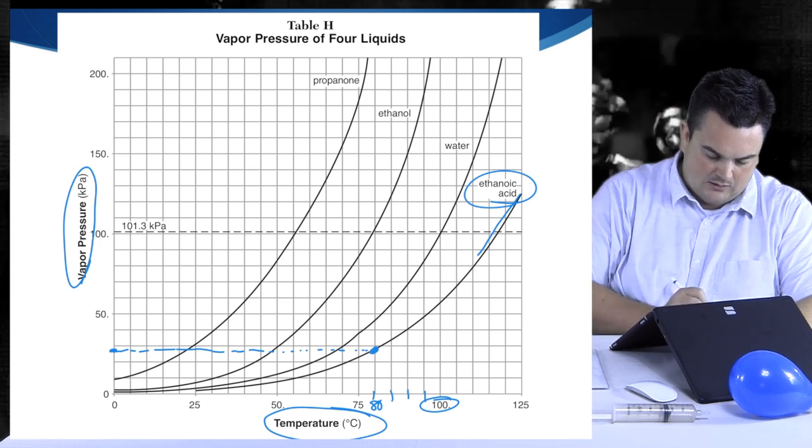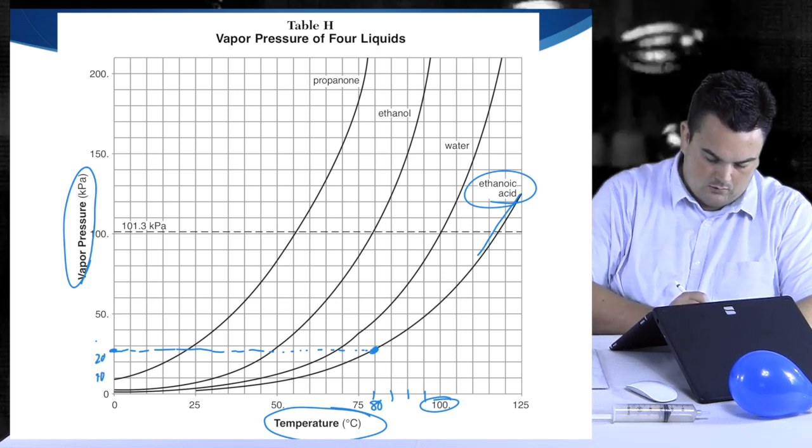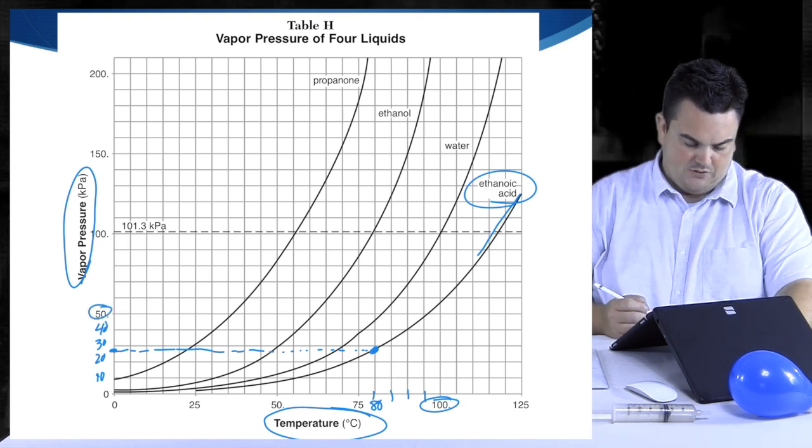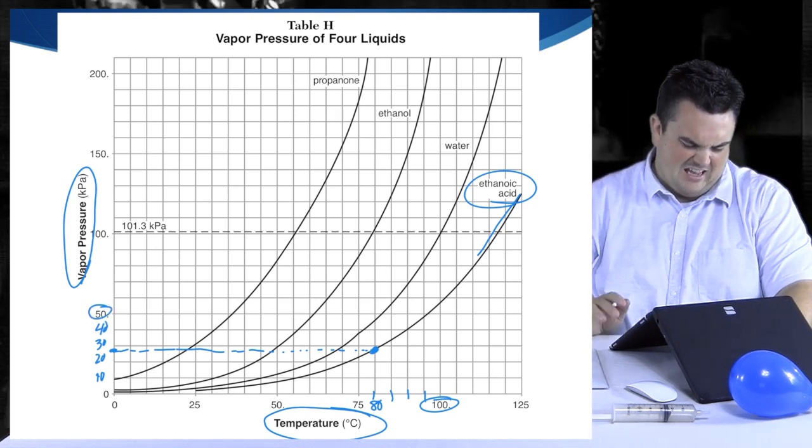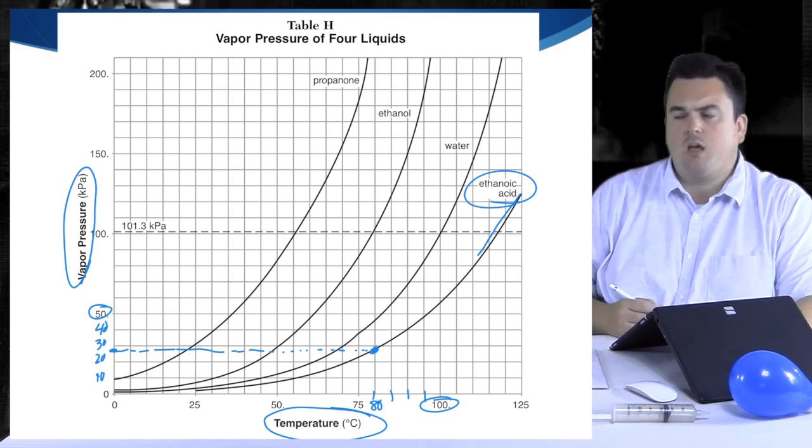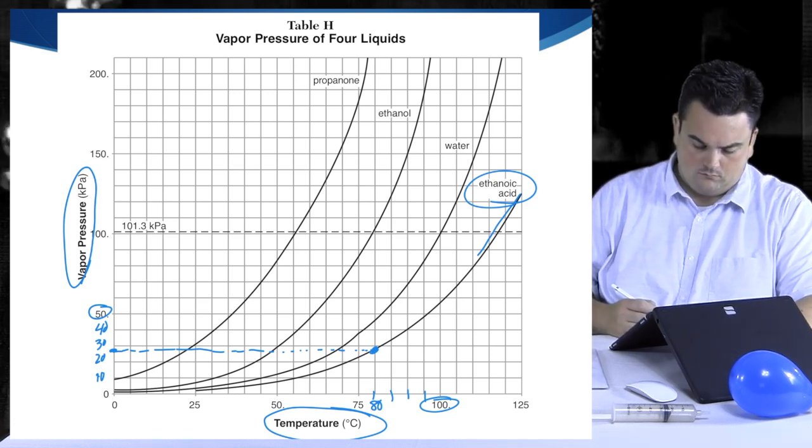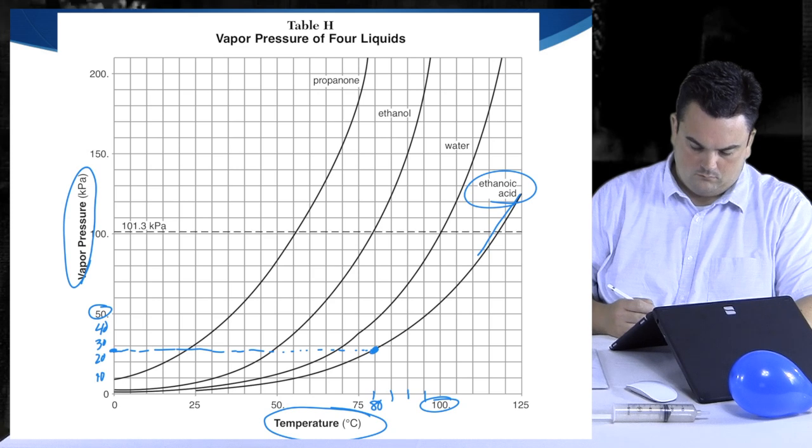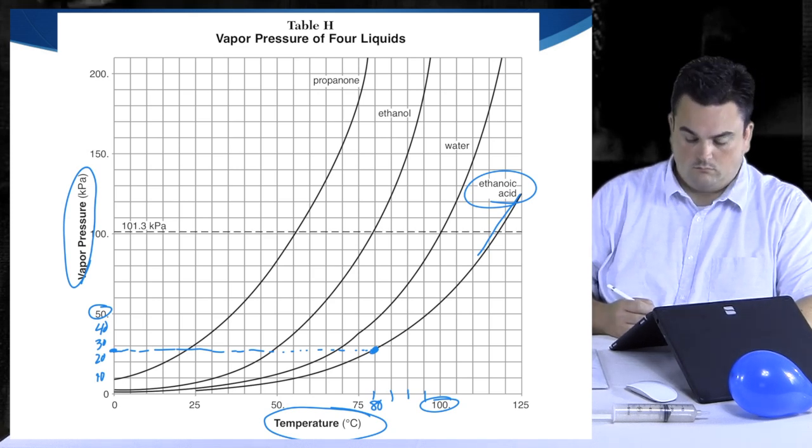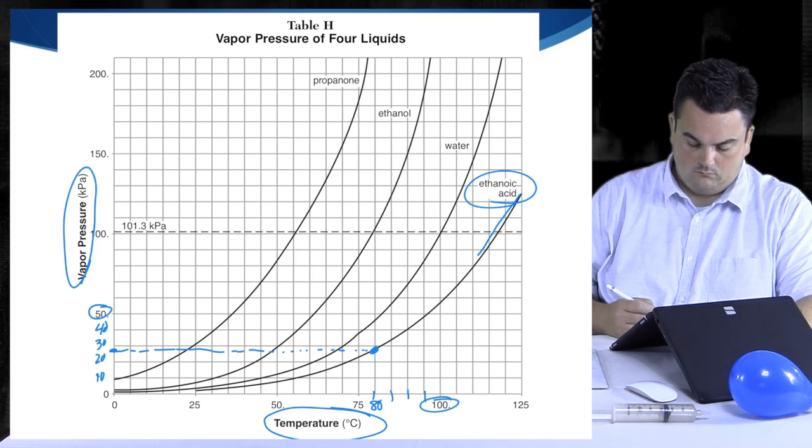And this axis goes up by tens, right? Yep. Because this would be 10, 20, 30, 40, and then my 50. So it looks like about 28 kPa. 28 kPa. Good. So it's okay if we estimate a little when it's between grid lines. You did have a unit. That was great. So about 28 kPa. Someone else might have a slightly different answer than that, and that is certainly okay.